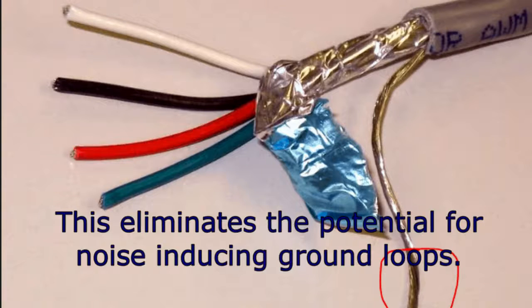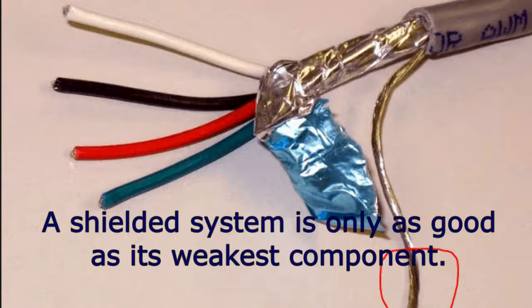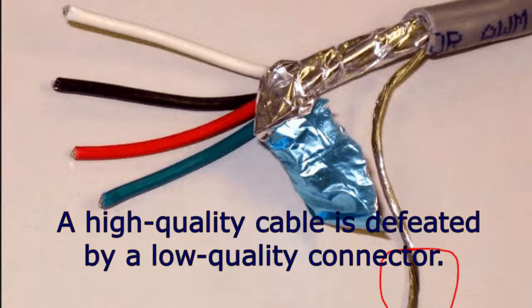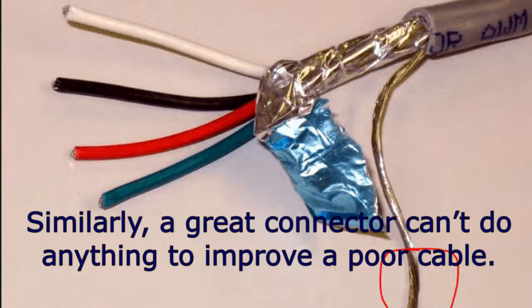Five, ground the cable at one end. This eliminates the potential for noise-inducing ground loops. A shielded system is only as good as its weakest component. A high-quality cable is defeated by a low-quality connector. Similarly, a great connector can't do anything to improve a poor cable.